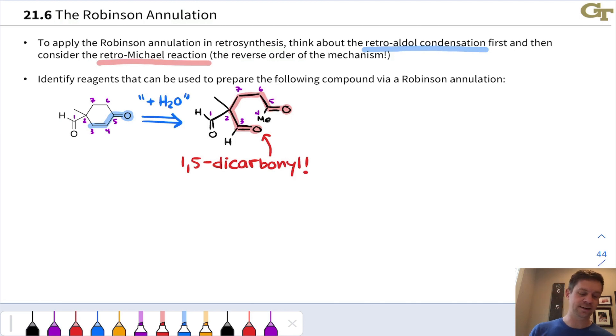So this can be worked backwards to a Michael donor and a Michael acceptor. We can see, for example, that we have a 1,3-dicarbonyl structure built into what I'm circling in red here, and we've got the potential for this set of carbons to be part of an alpha-beta unsaturated ketone, in this case, and this allows us to work back to these structures.